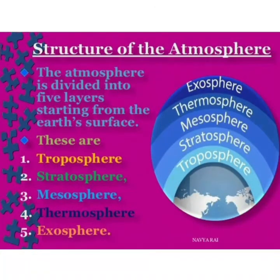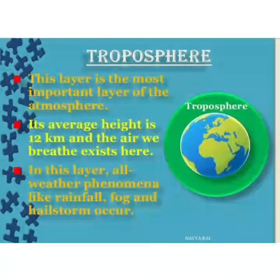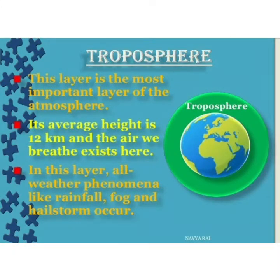Our next topic is the structure of the atmosphere. The troposphere is the lowest region of the earth. It has the maximum amount of air and all living things exist here. This is where we have cloud formation, rainfall, fog, hail, and so on.